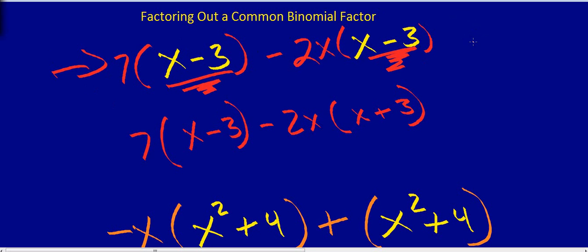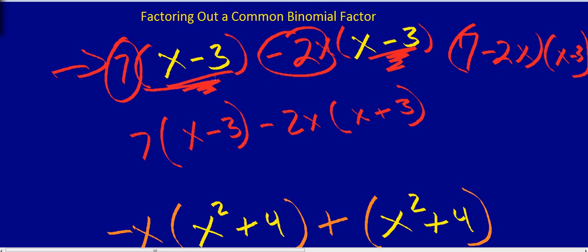So what we do with these is you take 7 minus 2x times x minus 3. And that's it. You take your numbers in front of your parentheses and you rewrite them so that they're in a set of parentheses. Then you're going to multiply them by what's already in parentheses, x minus 3.